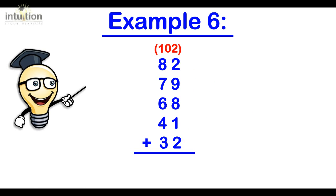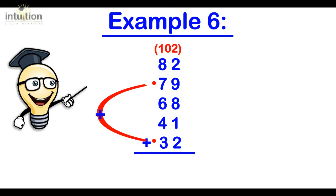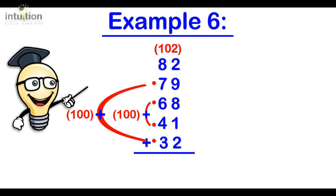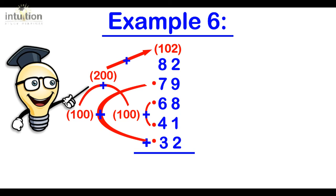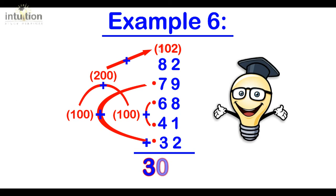And then we notice also that in the tens column the 7 tens and the 3 tens complement to make 100. And also the 6 tens and the 4 tens complement to make 100 as well. So that gives us 200 in total. We can add that now directly to the 102 from before giving us 302.